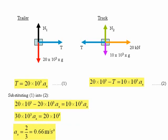Then if we want the tension in the tow bar, we can go back and substitute that value of Ax into either equation 1 or equation 2. Here I've substituted it into equation 1. And that gives us, solving that numerically, 13.2 kN for the tension in the tow bar.